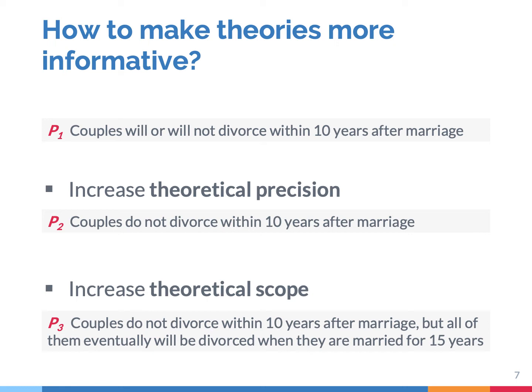Suppose we want to develop a good sociological theory which predicts if married couples will divorce or not, and if so, when. Proposition 1 argues that couples will or will not divorce within 10 years after marriage. This proposition is a tautology — it's always true because it does not exclude any possibility in reality. There are two ways to make this theory more informative: you can make the theory more precise, and you can broaden the scope of the theory. Information content depends on the degree of theoretical precision and theoretical scope. Proposition 2 increases the theoretical precision — it states very precisely that no couple will divorce within 10 years after marriage. That's informative because it can be wrong; in other words, it can be falsified. Theoretical precision relates to the degree to which the theory excludes possibilities of what could happen with respect to a particular case.